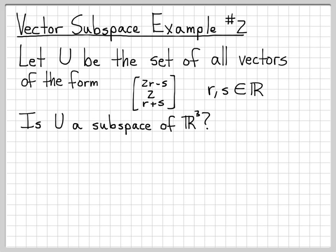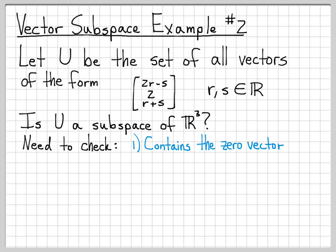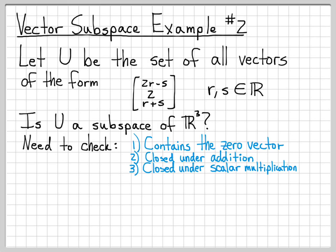What we're asking is: is U a subspace of R³? U is obviously a subset of R³ — every vector in U has this form, so it's clearly an element of R³. But being a subspace means something very specific. We need to check three properties: first, the set contains the zero vector; second, it is closed under vector addition; and third, it is closed under scalar multiplication.